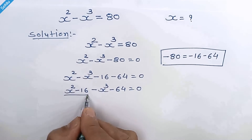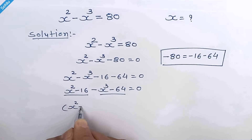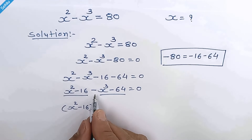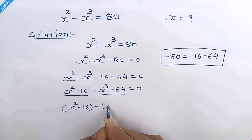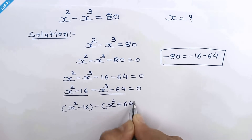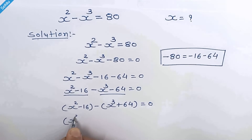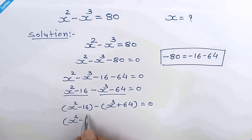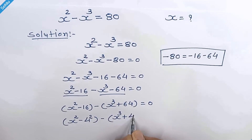We will put brackets here and here. So x squared minus 16, and we have a negative sign here, so inside the bracket it will be positive. Note that 16 is 4 squared and 64 is 4 cubed.